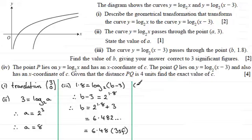So what happens in part 4? Well we're told that the point P lies on y equals log base 2 of (x minus 3) and also has an x coordinate of c. Given that the distance PQ is 4 units find the exact value of c. So I'll give you a moment just to pause the video if you want to have a go at this one.